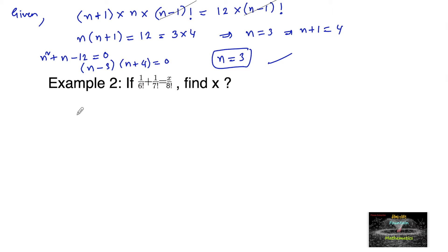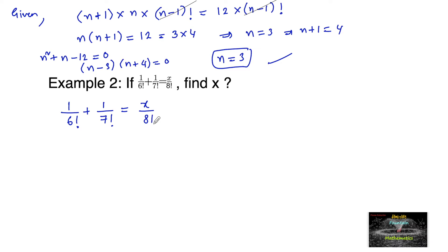Example 2. If 1 upon 6 factorial plus 1 upon 7 factorial is equal to x upon 8 factorial, we need to find the value of x.